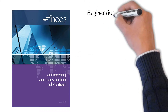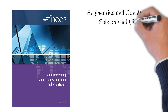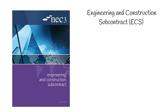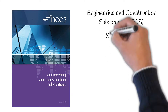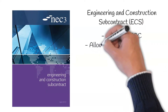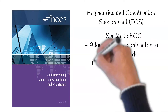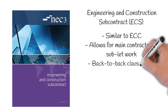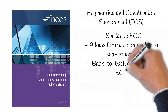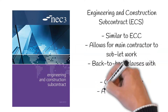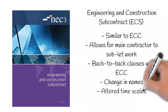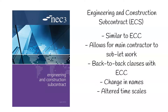Engineering and Construction Subcontract, or ECS for short. This contract is very similar to the above. However, it allows for the main contractor to sublet part of the works of a project to a subcontractor, allowing for back-to-back clauses. The only difference is a slight change in names, i.e. contractor and subcontractor, and timescales are altered to facilitate the timescales required in the ECC contract.